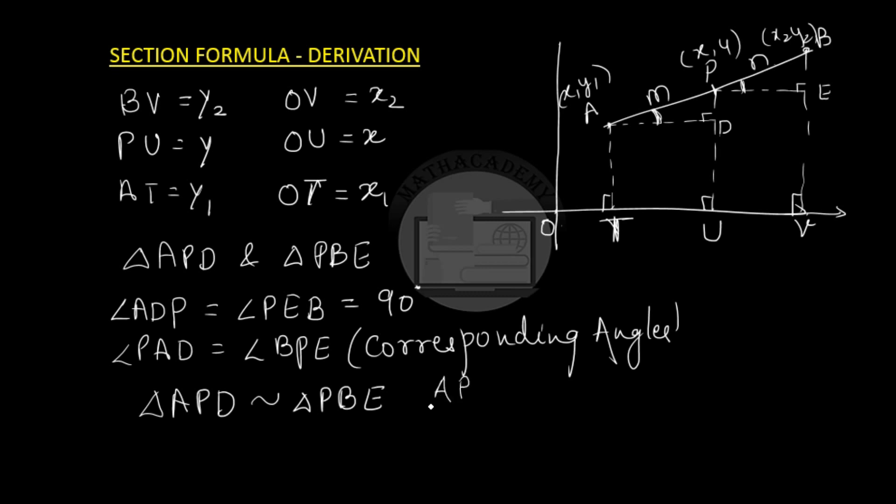So the corresponding sides are AP and PB. The ratio of AP and PB is same as the ratio of AD and PE, which is same as the ratio of PD and BE. I hope this much is clear to everyone.